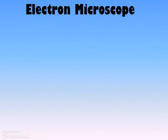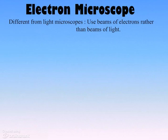Another category of microscopes, different from light microscopes, are electron microscopes. Instead of using beams of light, electron microscopes use beams of electrons.